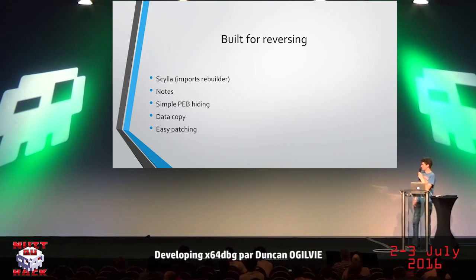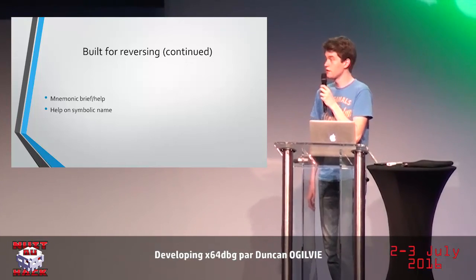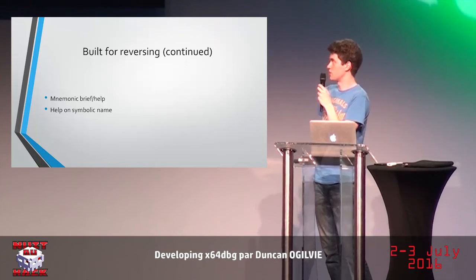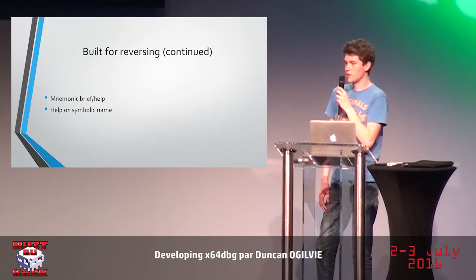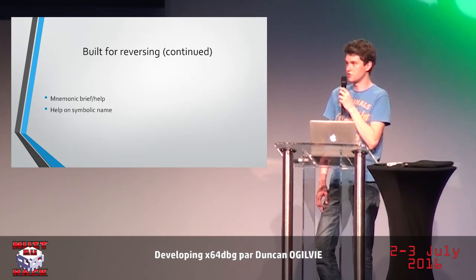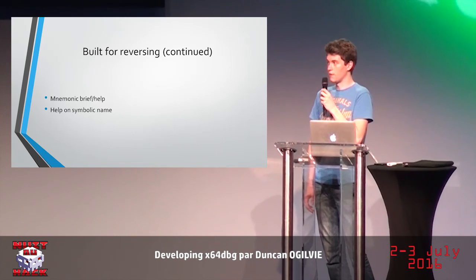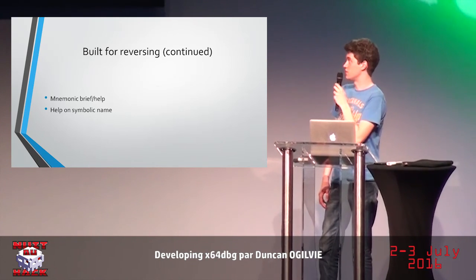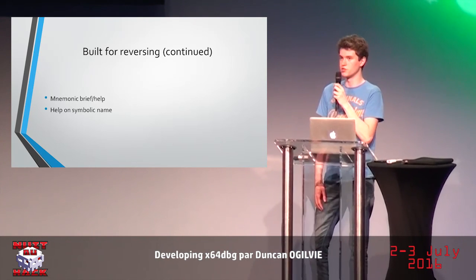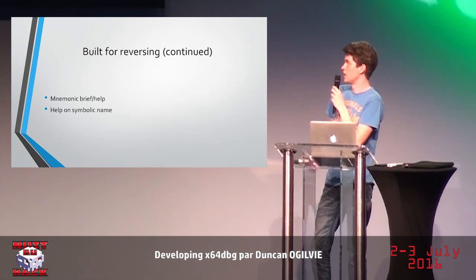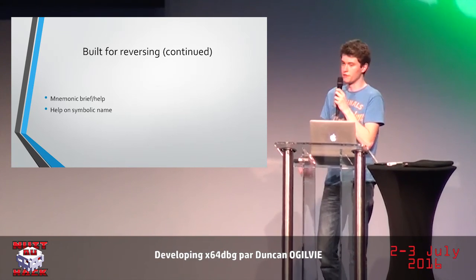Unlike IDA, where patching used to be pretty hard — though I can't afford an IDA license so I wouldn't know. There's also a feature taken from Veldair called the mnemonic brief, which gives you a very brief description of what each instruction does. This can be very useful, especially if you need to check which type of conditional jump uses which flags. And there's also a very hidden but useful feature called help symbolic name, which will basically Google any label or reference address that has a name — and hopefully it finds something useful.